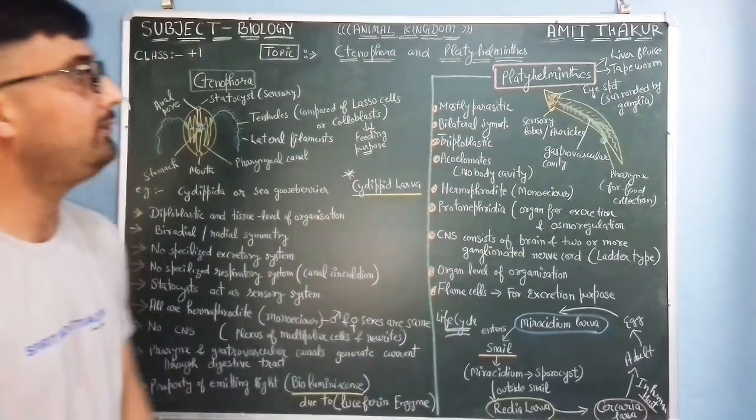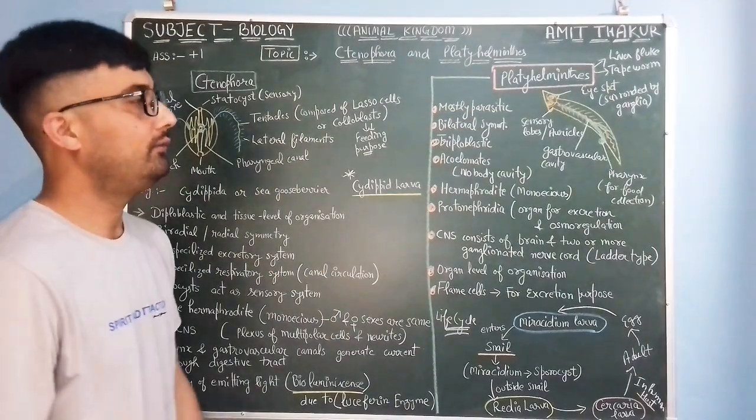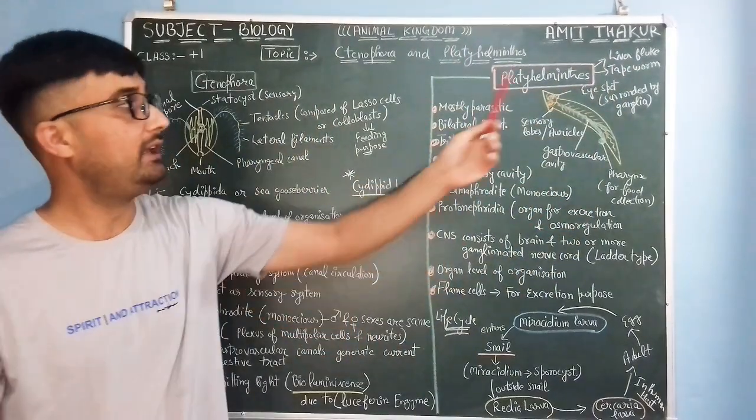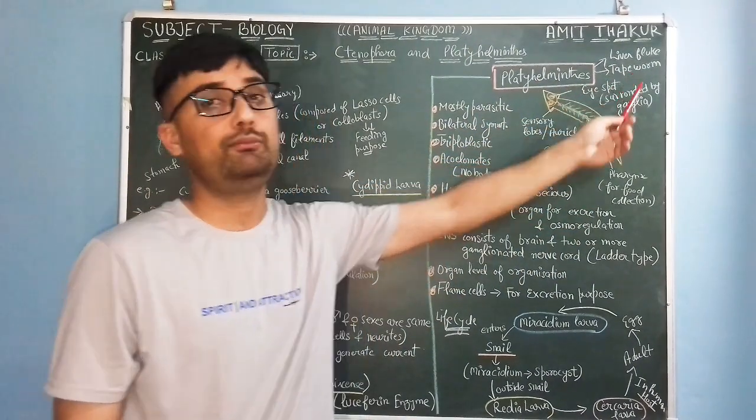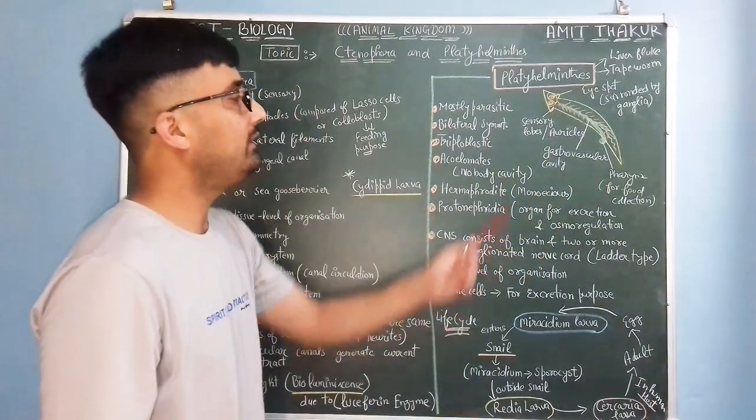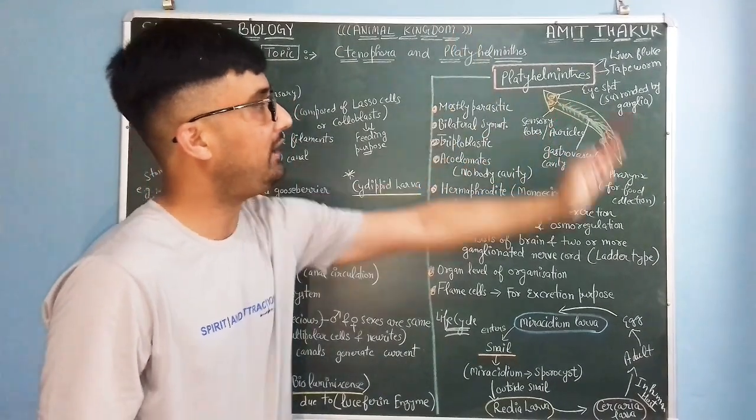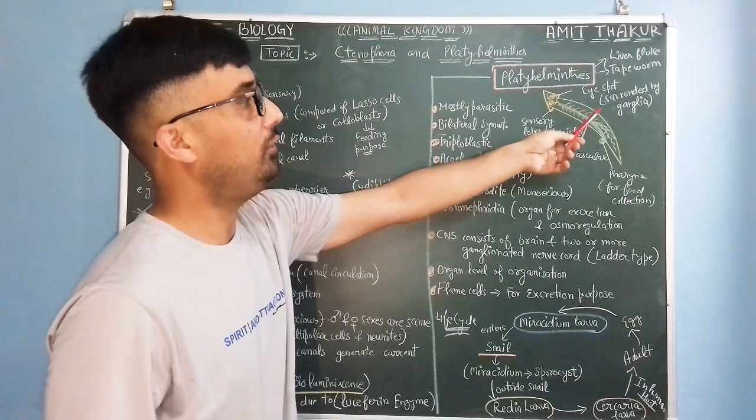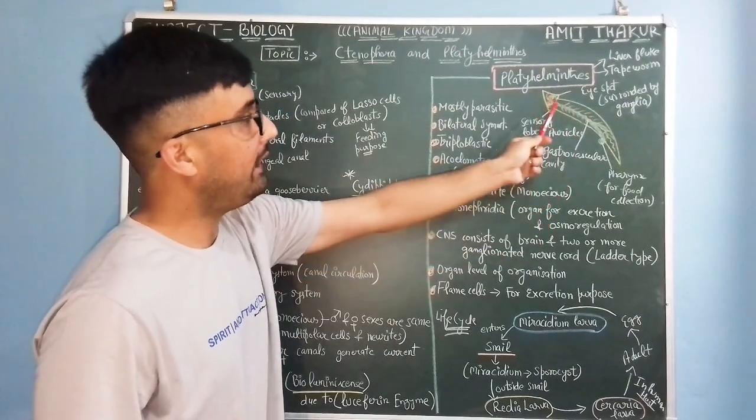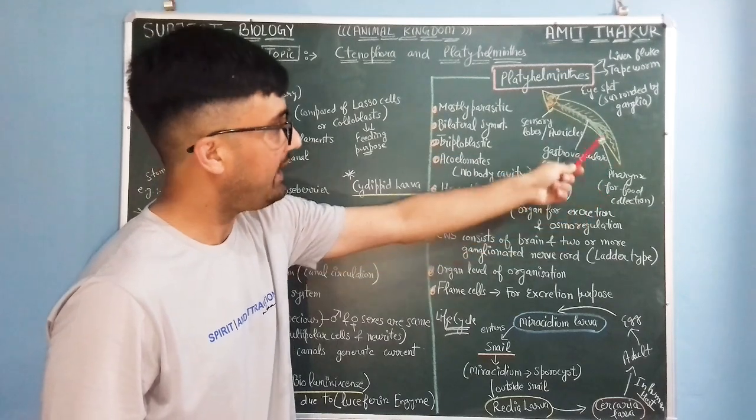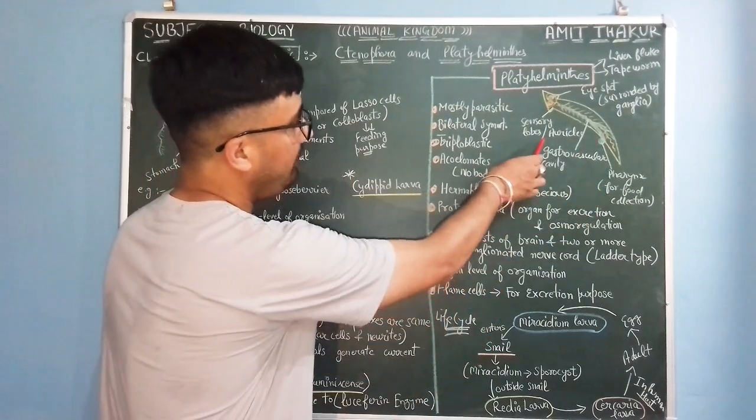Let's come to the next phylum, Platyhelminthes. For example, liver fluke, Fasciola hepatica and tapeworm, especially in case of Taenia. So this is the simple structure of Platyhelminthes. This is a flat structure and have eye spots surrounded by ganglia. This gastrovascular cavity has pharynx for food collection, have sensory lobes and auricles.